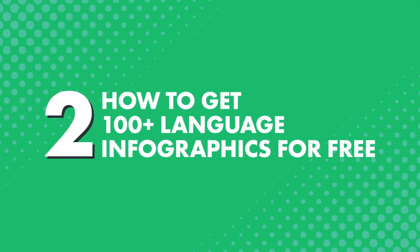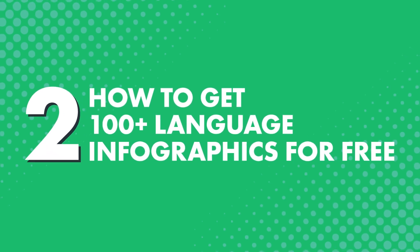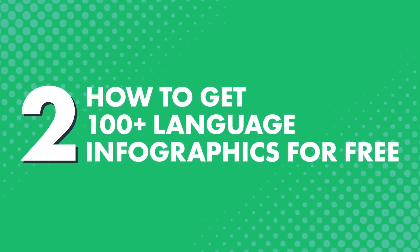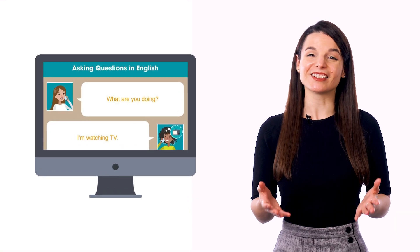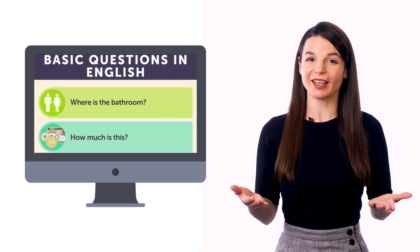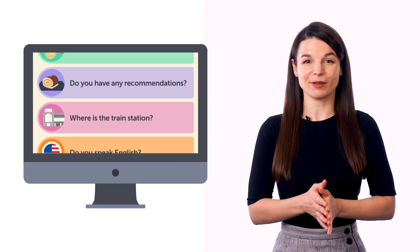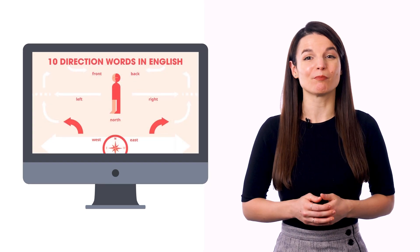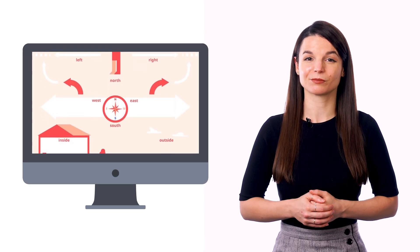That sounds good and all, but you'd still need to get these pictures and infographics, right? The good news is, you can download our infographics when you sign up for a free lifetime account. That's over 100 pictures and infographics teaching you the most common words and phrases. These contain several words and phrases per image, so you're not learning just one word at a time. Just download the pictures and infographics to your phone.